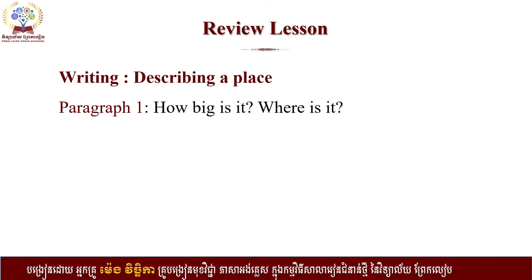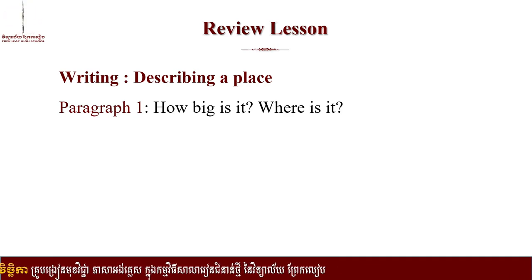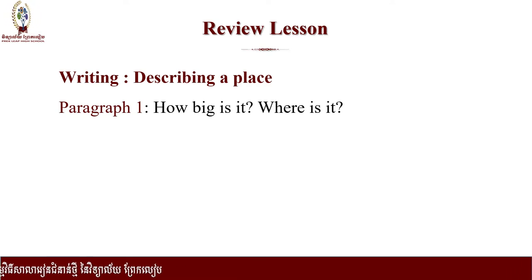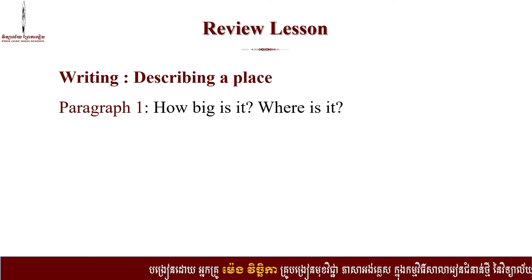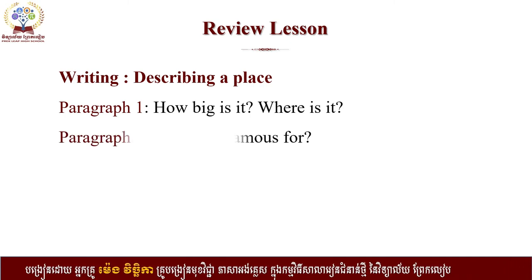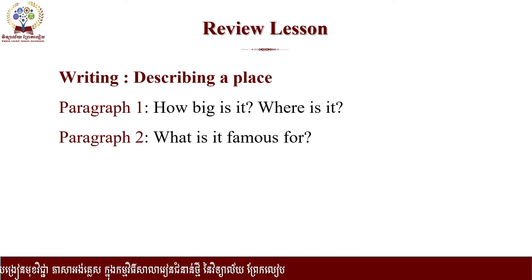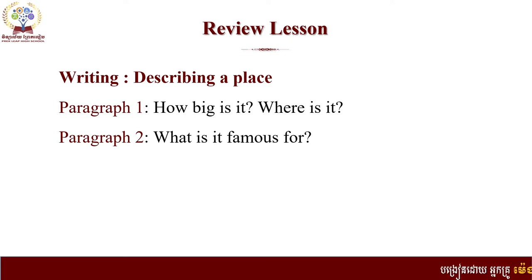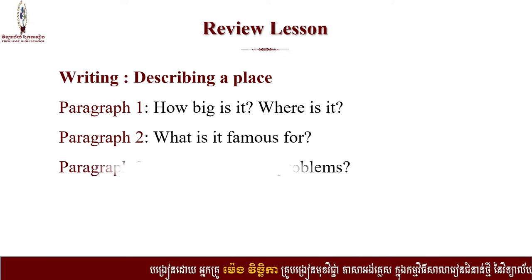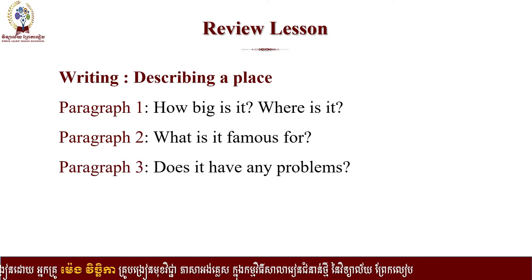The first paragraph is about the general information about the place. There are some questions that can guide you: how big is it, where is it? You can also add information about the population, climate, or transportation. The next paragraph is about what the place is famous for — some of you raised good examples like tourist sites in our capital city.